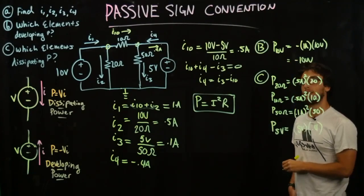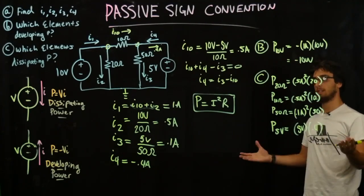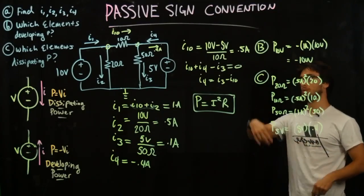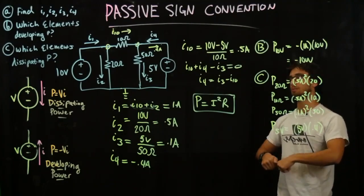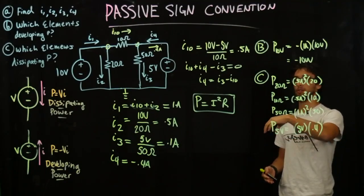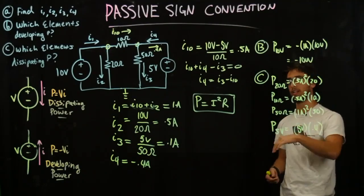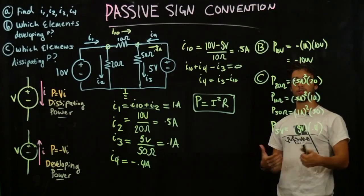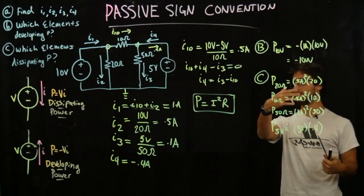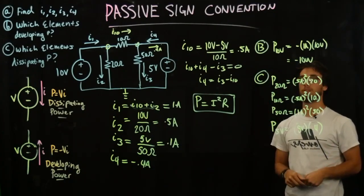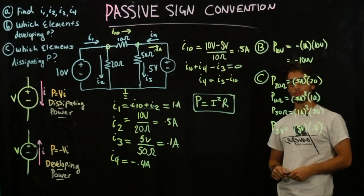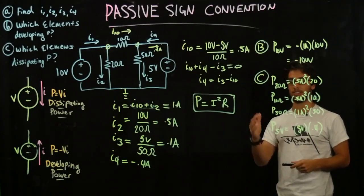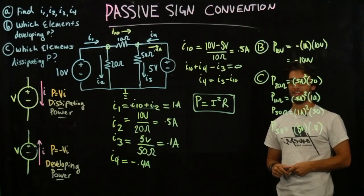And there you have it. To recap, we determined all of the currents running through this circuit, and by determining their directions — whether or not they flowed into the positive or negative part of the voltage sources — and the resistors, we were able to determine the power dissipated or developed within the circuit. Thanks for watching, and good luck on any exams you're taking. Have a great day.